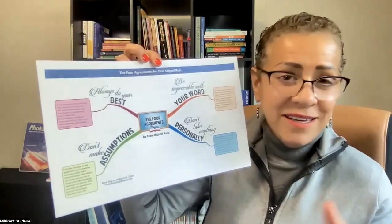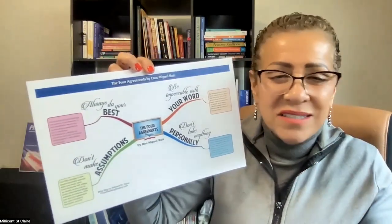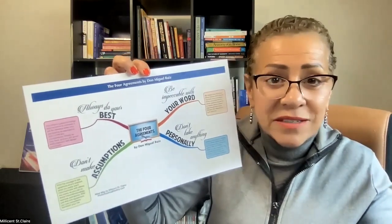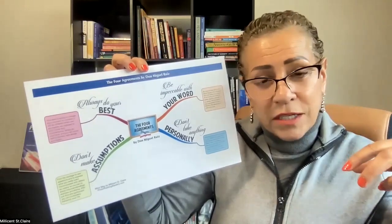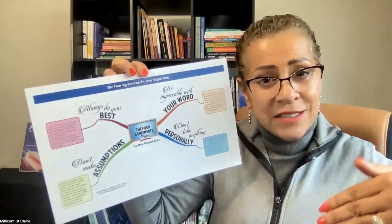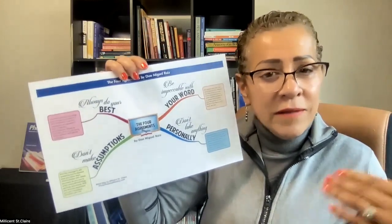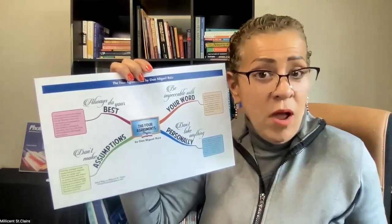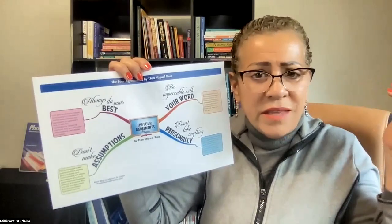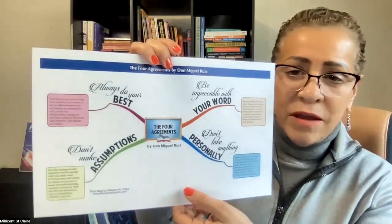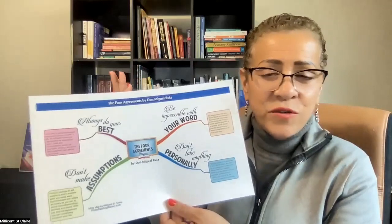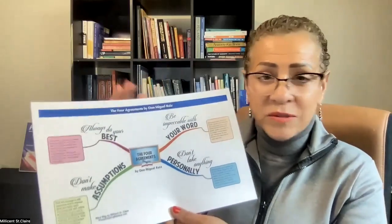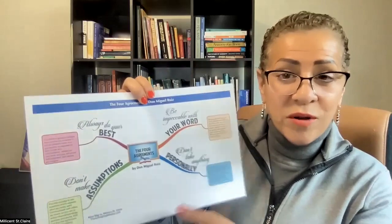I could have taken just chapter one and blown it out with a map all by itself. He talks about how when we're born we get domesticated into thought systems, ideals, and belief systems we didn't sign up for — superimposed on us. As we mature and grow, there are some things we want to unsubscribe to. So it's time to create new agreements, and these are some of the ones he sets forth according to the Toltec system. I love them because they're universal principles — it's not about a belief system.